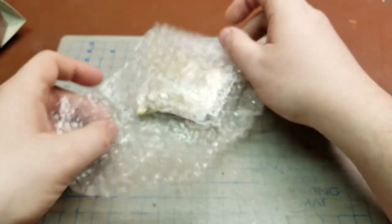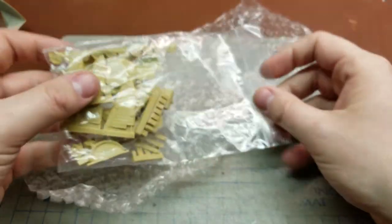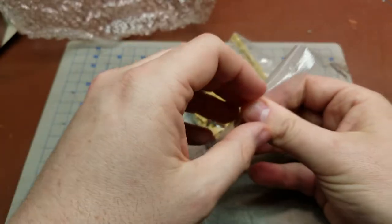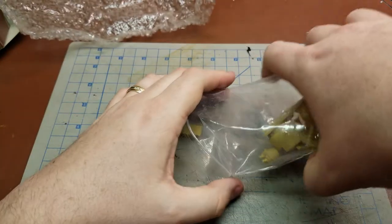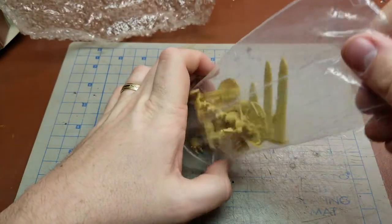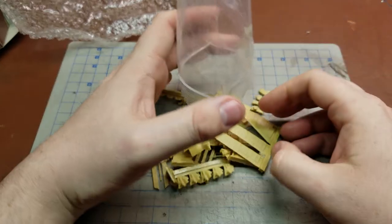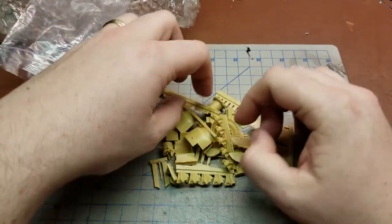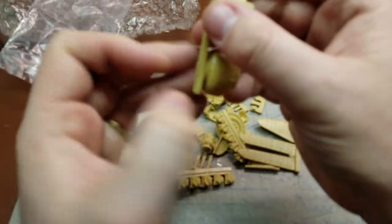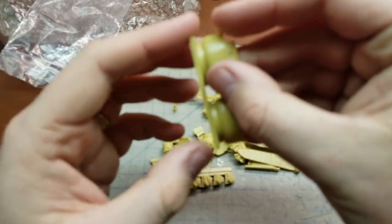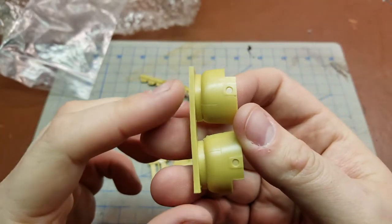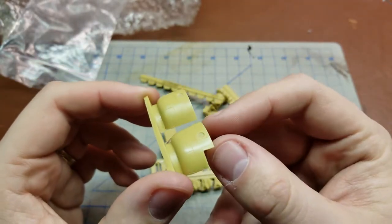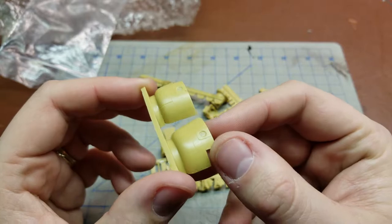And then we'll get into the resin bits here. So we have the two sides to the engine cowl. There you go, and I'll lock that one in. Really nice panel line detail, rivet detail.